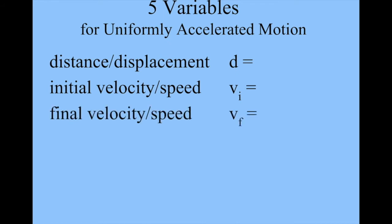The d is either distance or displacement, usually they're used interchangeably. We have initial velocity or initial speed, final velocity or final speed, and these are both v sub i and v sub f, with acceleration and time.